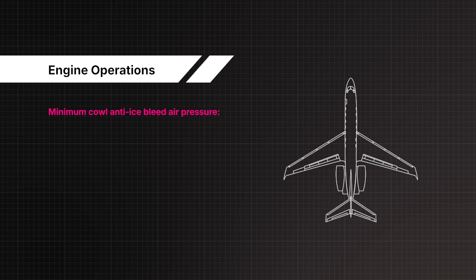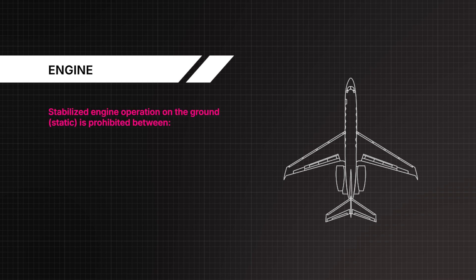Minimum cowl anti-ice bleed air pressure: 4 PSI. Stabilised engine operation on the ground (static) is prohibited between 60 to 80% LP RPM with crosswinds greater than 15 knots.